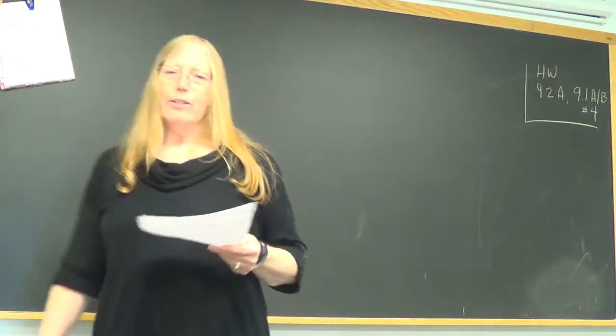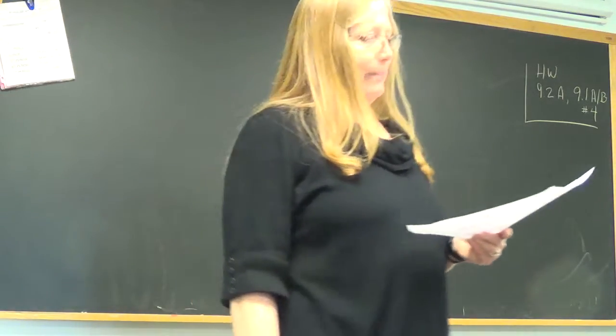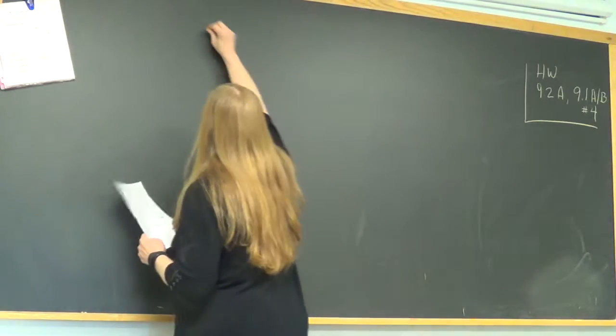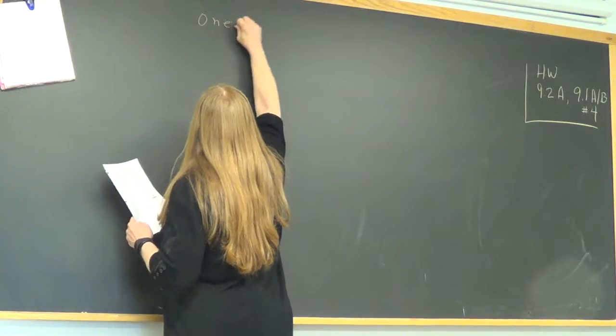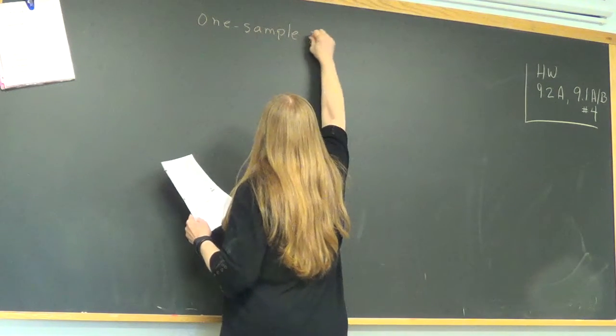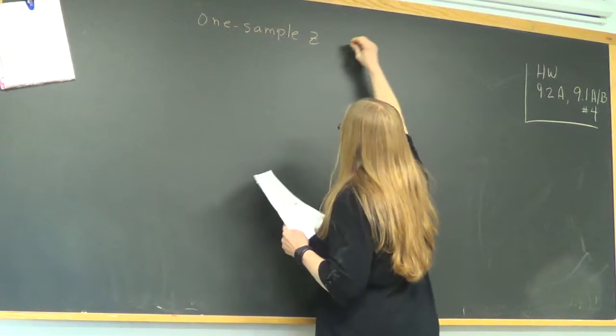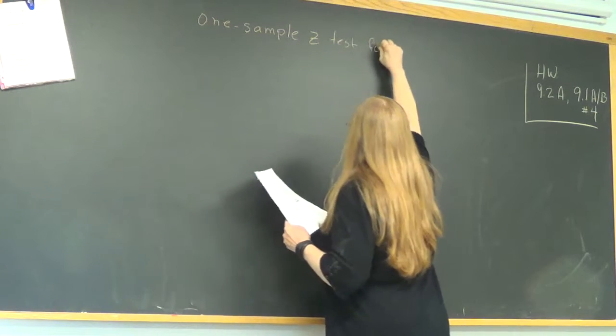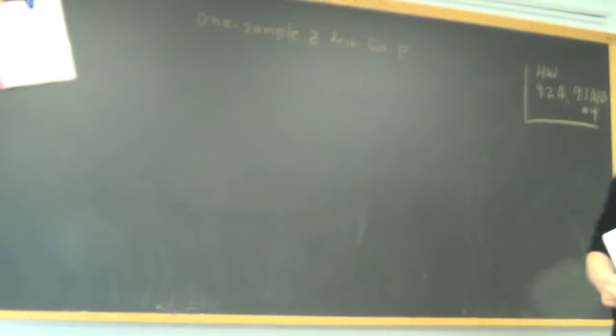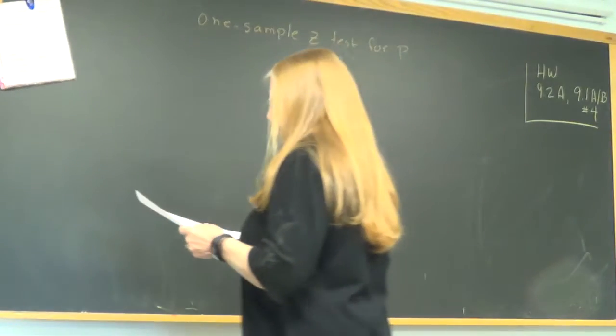So your job right now is to watch and write. Today we're going to conduct a t-test. So it's going to have a name. One sample z-test for proportion. Remember we had earlier one sample z confidence intervals for proportion. So this is one sample z-test and we're going to apply what we know so far in this chapter.